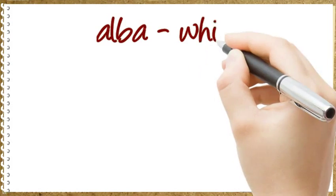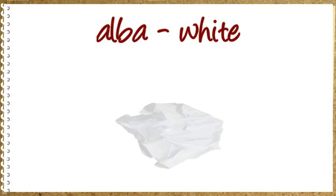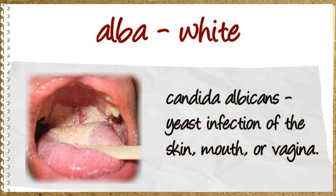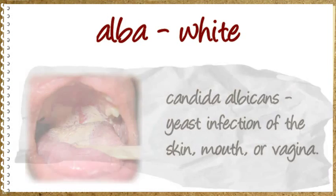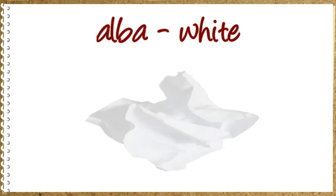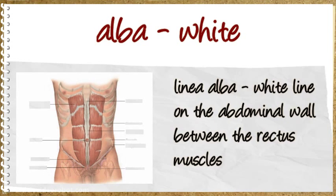Alba means white. Candida Albicans: yeast infection of the skin, mouth, or vagina. Linea Alba: white line on the abdominal wall between the rectus muscles.